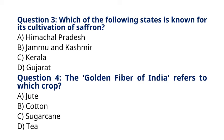Question 4: The golden fiber of India refers to which crop? A. Jute, B. Cotton, C. Sugarcane, D. Tea. The correct answer to question 4 is option A, Jute. Jute is known as the golden fiber of India due to its golden color and economic importance in the textile industry.